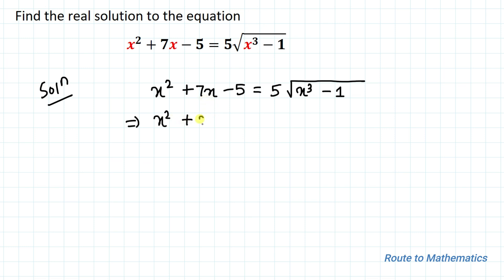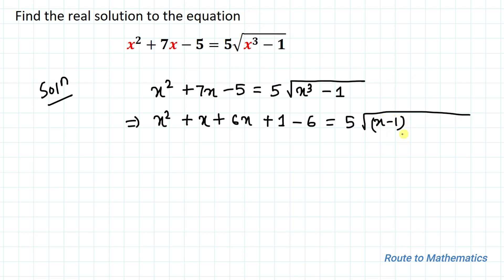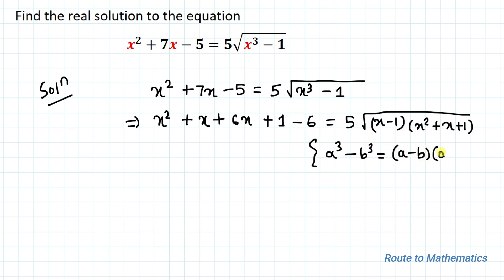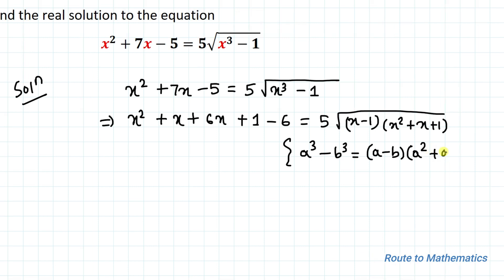Here I can write 7x as x + 6x, and -5 as +1 - 6, so the left side becomes x² + x + 1 + 6(x - 1). On the right side, I apply the algebraic identity a³ - b³ = (a - b)(a² + ab + b²), giving 5√((x-1)(x² + x + 1)).